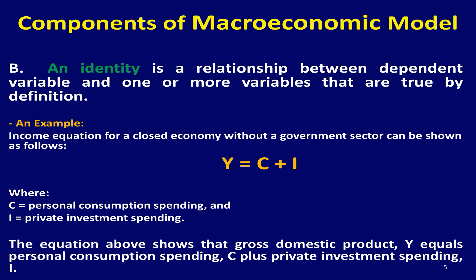An identity is a relationship between variables that is true by definition. For example, saving equals income minus consumption spending: S = Y − C. Also, income for a closed economy without a government sector can be shown as: Y = C + I, where C equals personal consumption spending and I equals private investment spending.